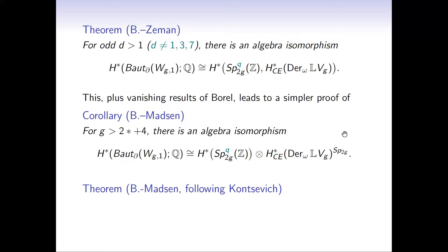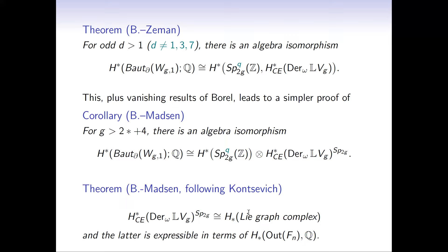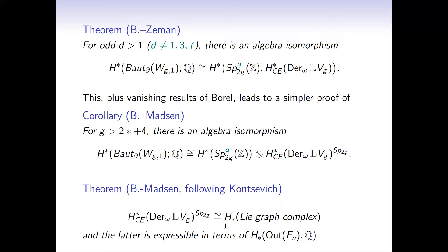This invariant theory is very interesting and goes back to Kontsevich, who introduced graph complexes. The Chevalley-Eilenberg homology can be expressed in terms of the homology of the Lie graph complex. Moreover, this is related to the homology of outer automorphism groups of free groups—a big surprise, since outer automorphisms of free groups have no right to appear in the topology of highly connected high-dimensional manifolds.